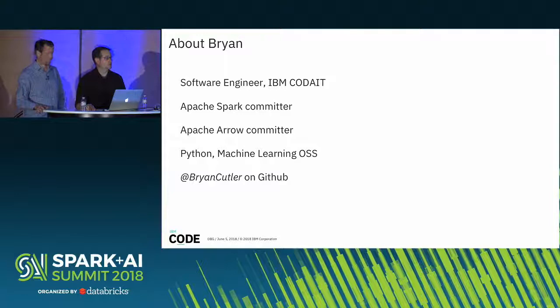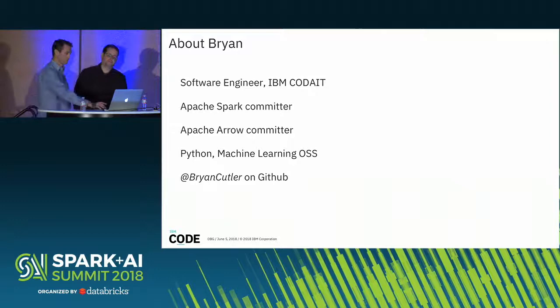Hi, I'm Brian Cutler. I'm a software engineer at IBM Code A. I'm also an Apache Spark Committer and Apache Arrow Committer. I work primarily in open source software — feel free to ping me on GitHub with any questions or if you have a code review to do.